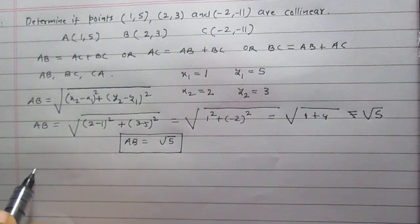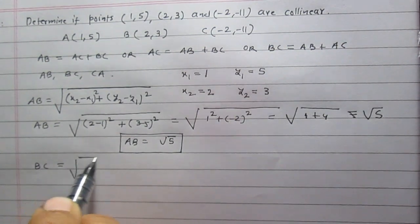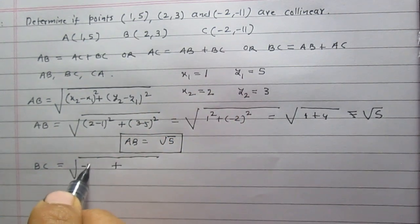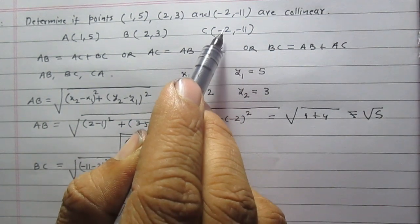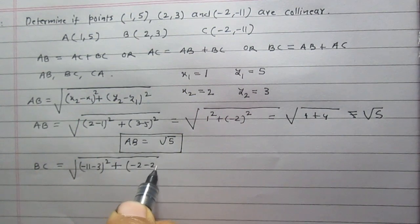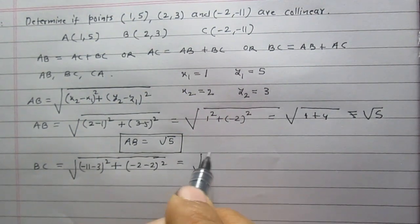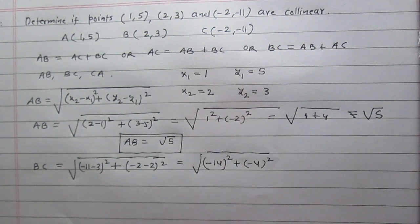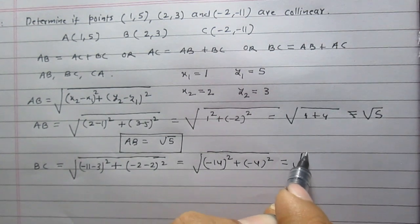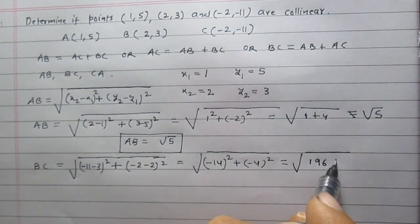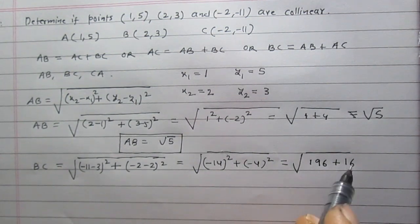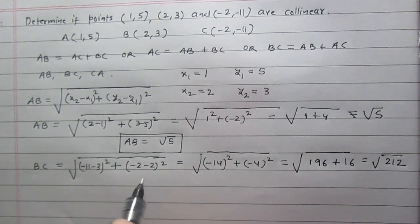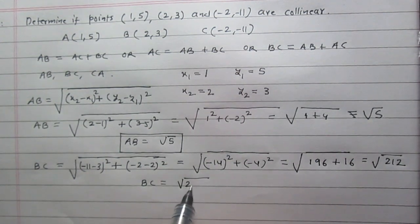Similarly, we can find distance BC. BC equals square root of (-11 - 3)² + (-2 - 2)², which equals square root of (-14)² + (-4)², equal to square root of 196 plus 16, which is square root of 212. So distance BC equals square root of 212 units.